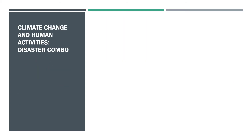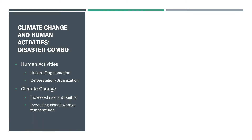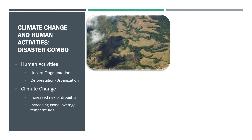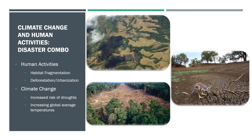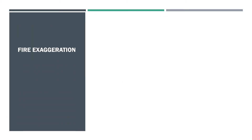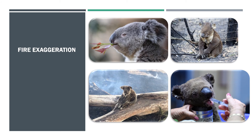There are just a few final points and examples I'd like to make. We have all heard of climate change. Climate change and human activities have both played a role in multiplying the negative effects of wildfires — humans through fragmentation of habitat and deforestation, and climate change through increased risk of drought and increasing global average temperatures. A clear example of how humans can increase the negative effects of fire can be seen in the case of the Port Macquarie koalas.